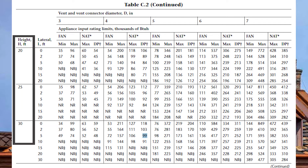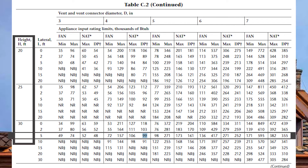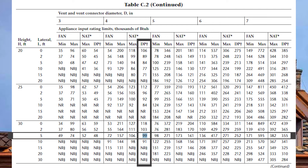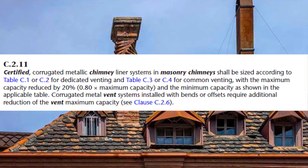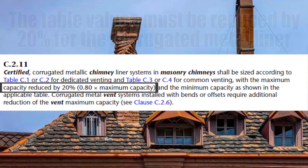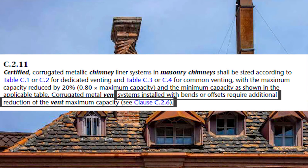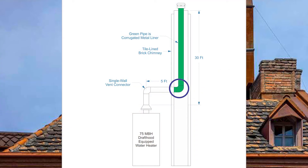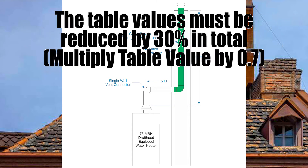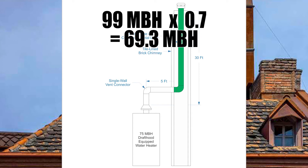Going to a vent height of 30 feet on the second page, across on a five foot lateral, looking at NAT DP — for a 75 mbh unit, 4 inch is good up to 99 mbh. Before selecting 4 inch as the final answer, I need to look back at GVRC 2.11 for the derate. I must reduce table values by 20% for the liner itself, plus an additional 10% for the 90 degree bend, totaling a 30% derate — multiply the table value by 0.7. So 99 mbh × 0.7 = 69.3 mbh, which is not enough for my 75 mbh unit.